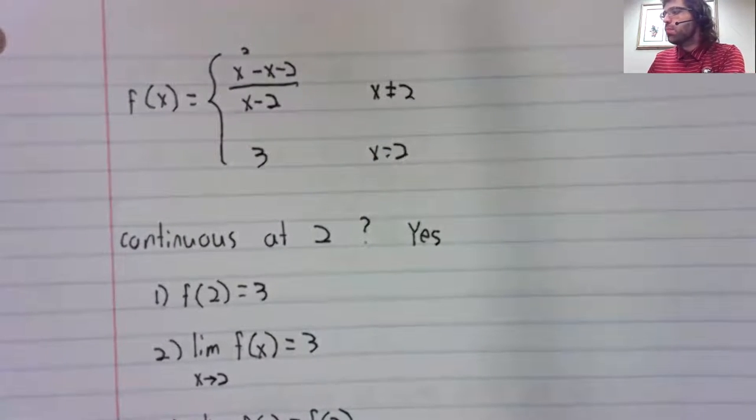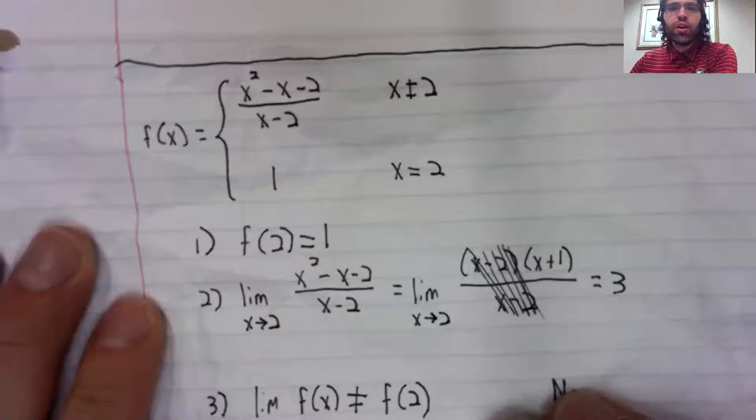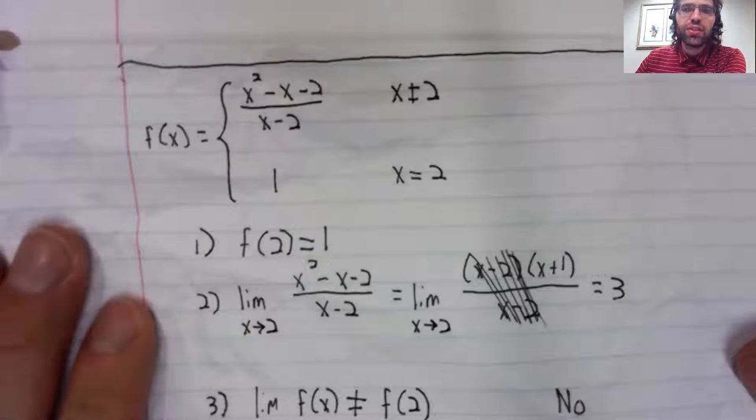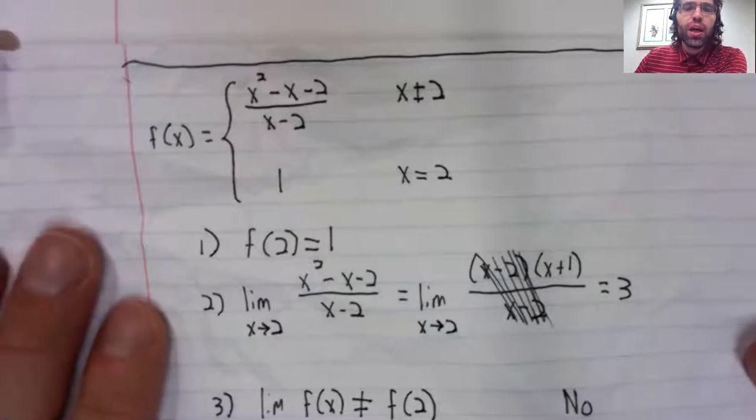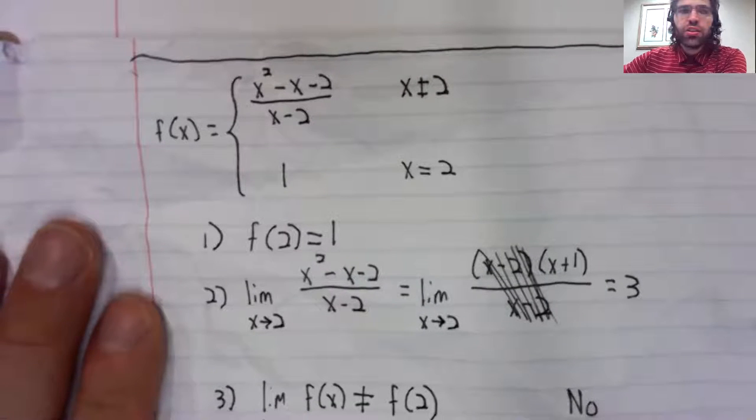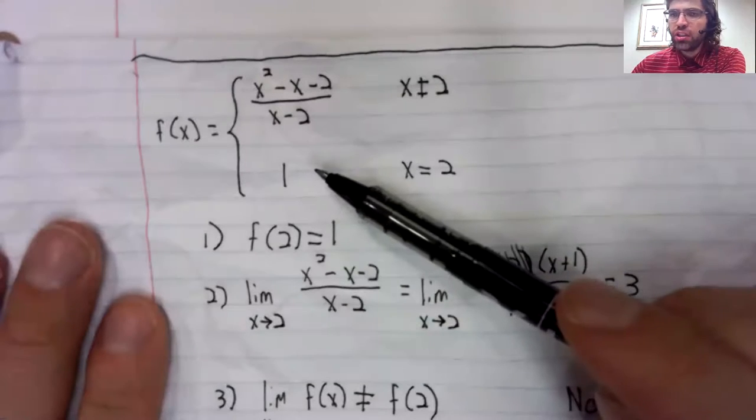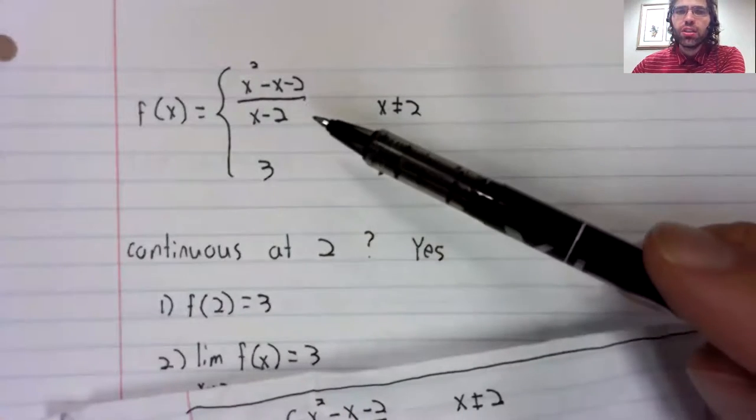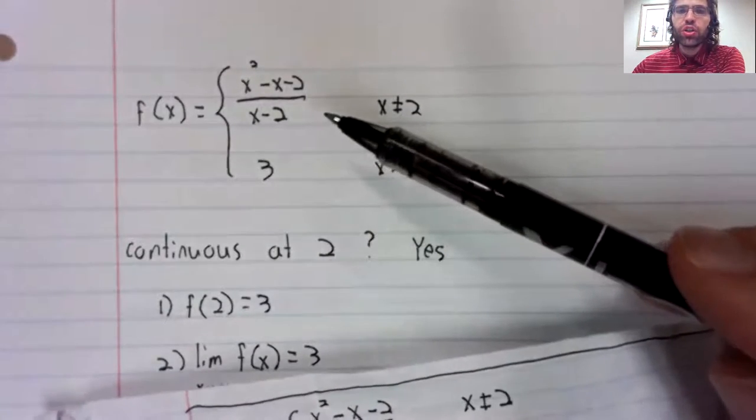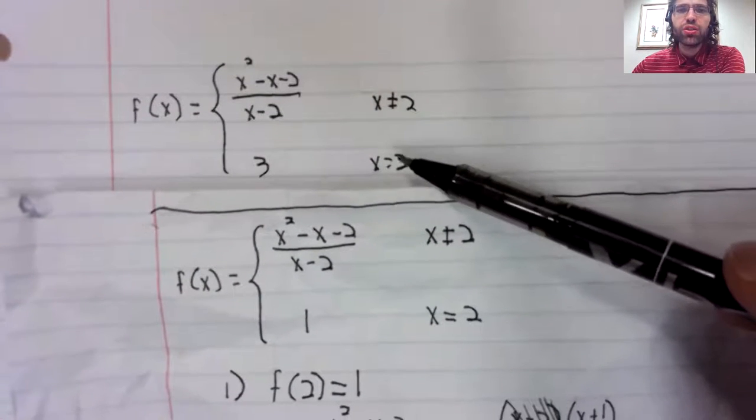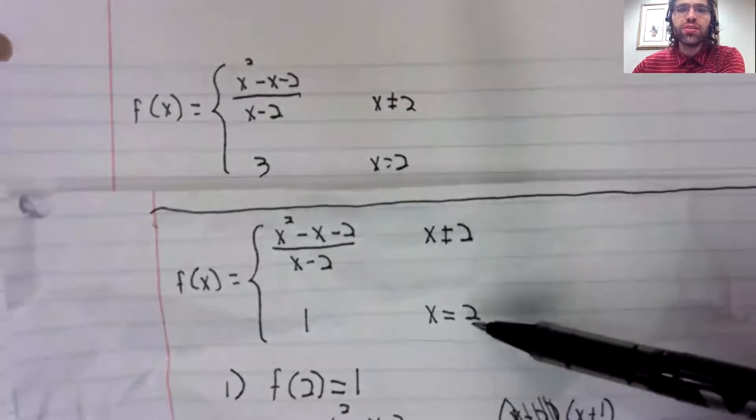at two and this function that is not continuous at two are almost identical. The only difference between the non-continuous and continuous function is what happens at two itself.